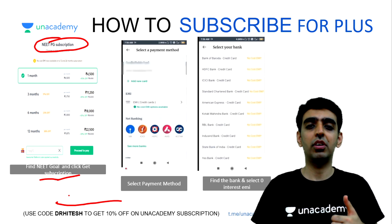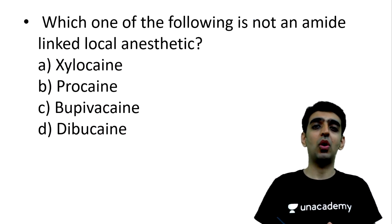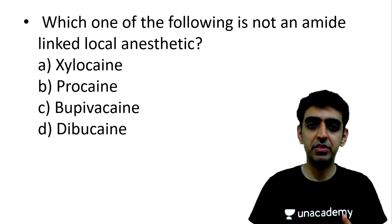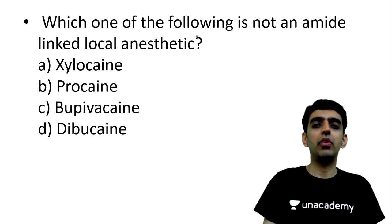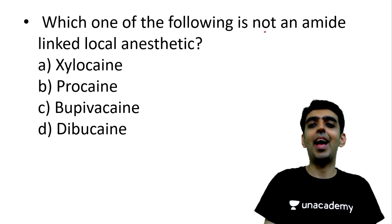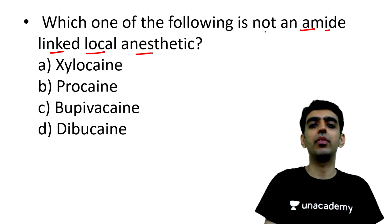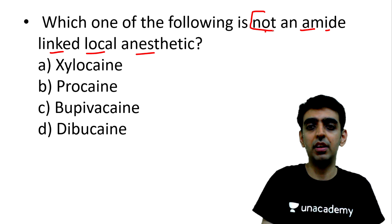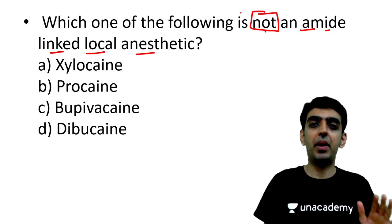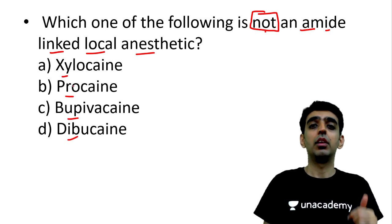Beginning with today's session on MCQ discussion for anesthesia. The first question: which one of the following is NOT an amide-linked local anesthetic? The options are xylocaine, procaine, bupivacaine, and dibucaine.